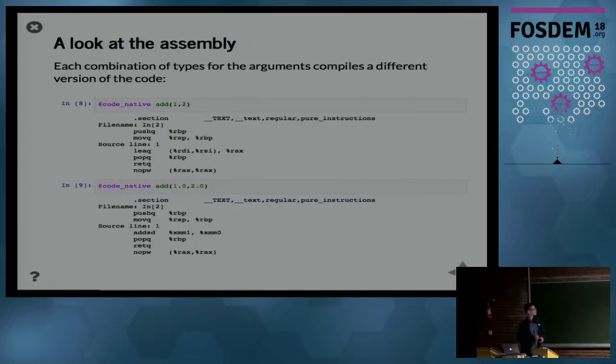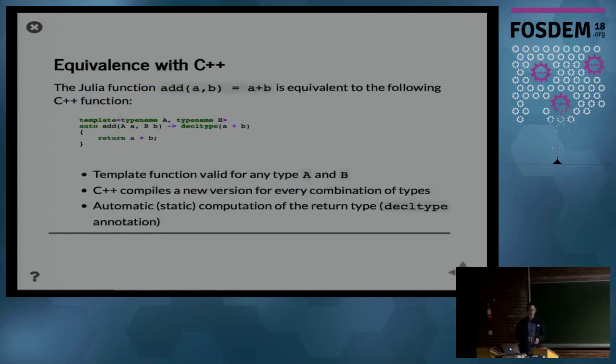How does that compare to C++? In C++, we can achieve the same thing. The syntax is slightly more verbose. Basically, if you remove all the green highlighted keywords, you have back again the Julia code, which is just the a plus b. But this in C++ achieves the same thing as we just saw in Julia. It's valid for any combination of types a and b. It automatically computes the return type and will, if you invoke this function, compile a new version for every combination of the arguments. In a way, C++ can do the same thing as Julia, but the syntax is more verbose and here it is purely a static computation of type only at compile time in C++.